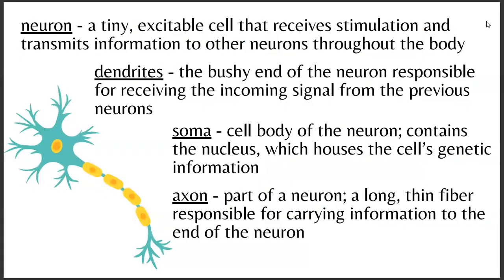A breakdown of the nervous system starts with the neuron — the most basic level — which is essentially a nervous system cell. A neuron is a tiny excitable cell that receives stimulation and transmits information to other neurons throughout the body. Here's a cartoon drawing of a neuron. The dendrites are the branch-like structures responsible for receiving information from other neurons.